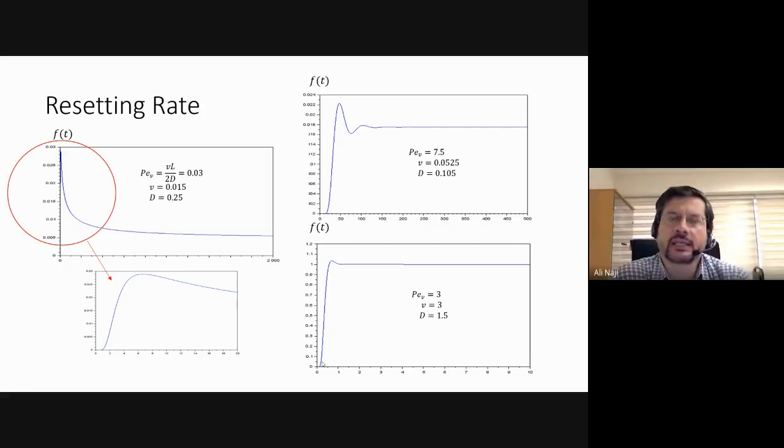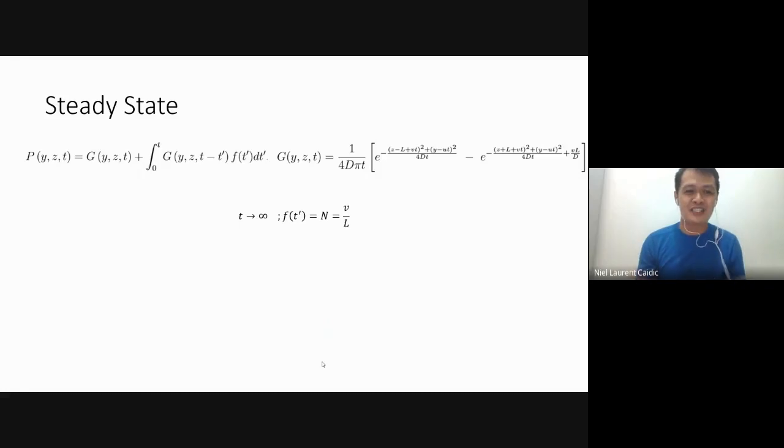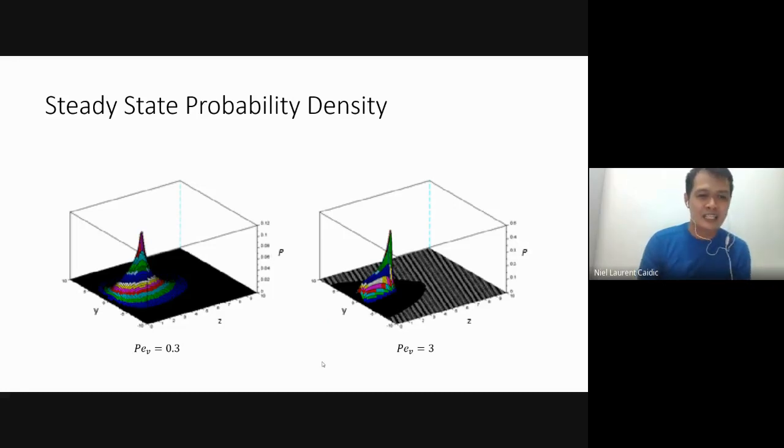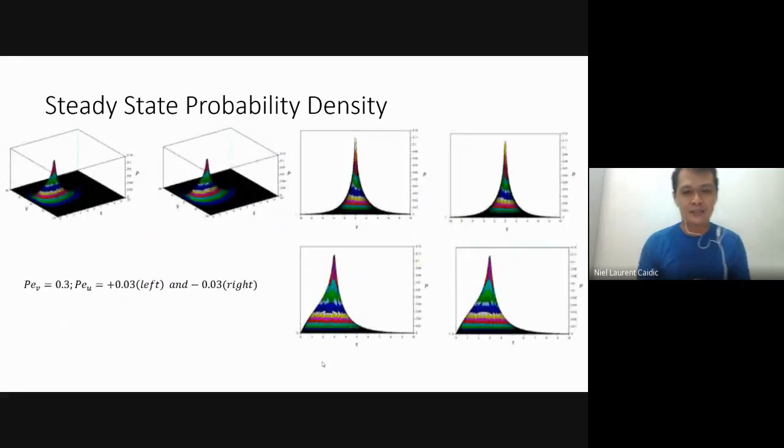We plotted the resetting rate. These two plots are recreations of plots obtained by Evans and Falsal. They observed that the resetting rate eventually approaches a constant with sufficiently long time. They plotted PeV, the Peclet number, which is small v over big D, at 0.03 and high Peclet number. We added a mid value, PeV equal to three. For illustration, we chose V equal to three and D equal to 1.5, so V over L will be one. It's obvious the plot approaches one as T approaches infinity. That is the constant that the resetting rate approaches: V over L as T approaches infinity.